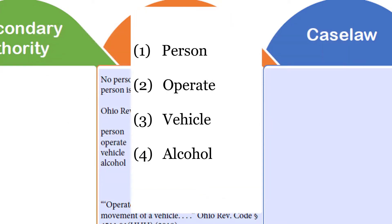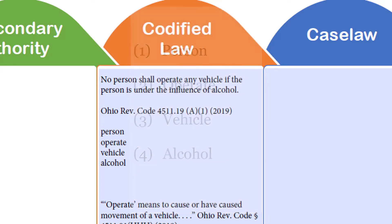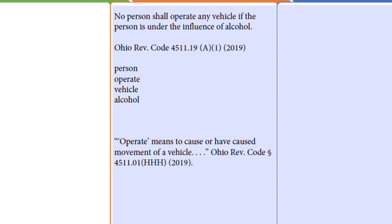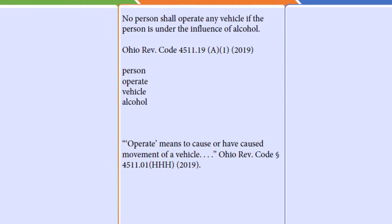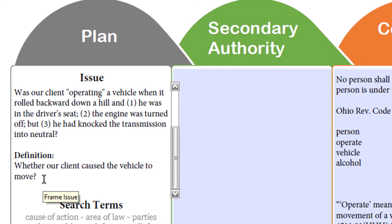For us the elements are: person, operate, vehicle, and alcohol. Of those, the one that another attorney would give us any trouble on would be 'operate,' so we go and research that further and find the statute that says 'operate means to cause the vehicle to move.' That becomes our third issue, so we need to keep track of this. Over here is a nice place to write down our most narrow issue: whether the client caused the vehicle to move.